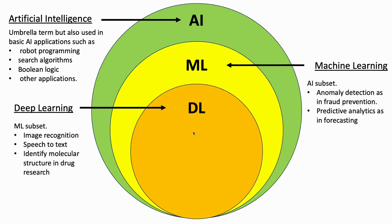If you need to go deeper, within machine learning you have deep learning. This is where you get into complex algorithms for image recognition — is this a dog, is this a cat, is something out of pattern in a visual environment? And of course, speech to text. Deep learning can also play a big role in identifying molecular structures and drug research, enormously speeding up the time it takes to bring a new drug to market.